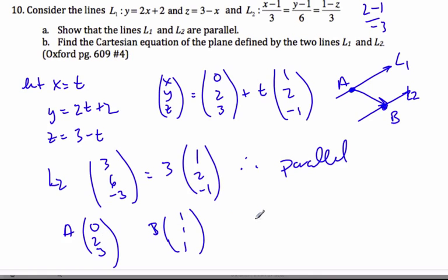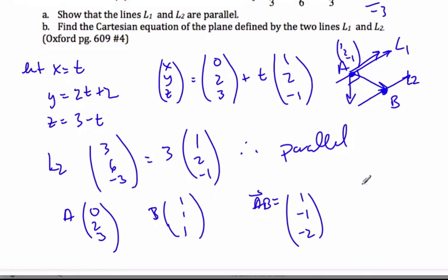So if I'm going to go AB vector, it's simple, 1. 1 minus 2 is negative 1. 1 minus 3 is negative 2. There's this vector AB. And I'm going to cross product it with 1, 2, minus 1. And that will obtain for me a normal vector which is perpendicular to both parallel lines.